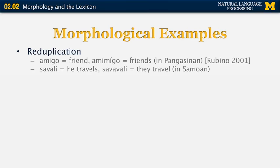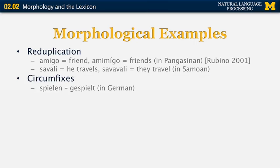We can also have circumfixes. For example, in German, the word 'spielen' is the infinitive of the verb 'to play,' and 'gespielt' is the past form. In this case we have a circumfix because part of the morpheme goes to the beginning of the word — the 'ge-' part — and part goes at the end — the '-t' form.